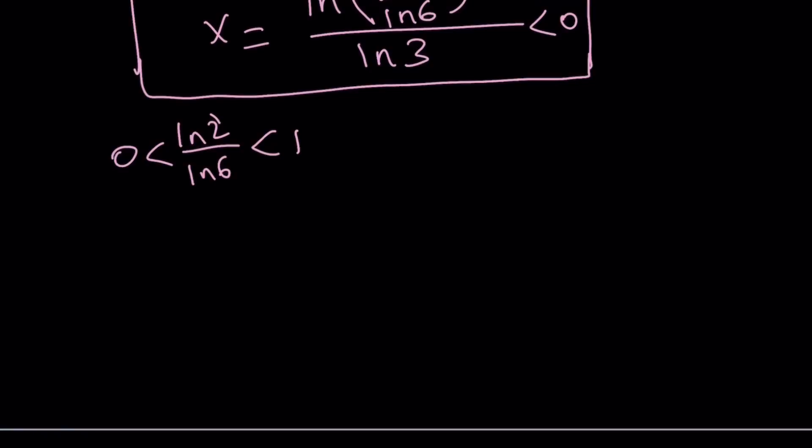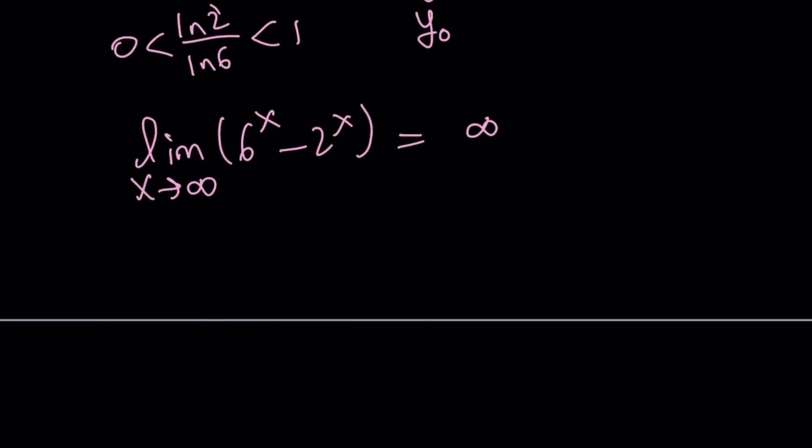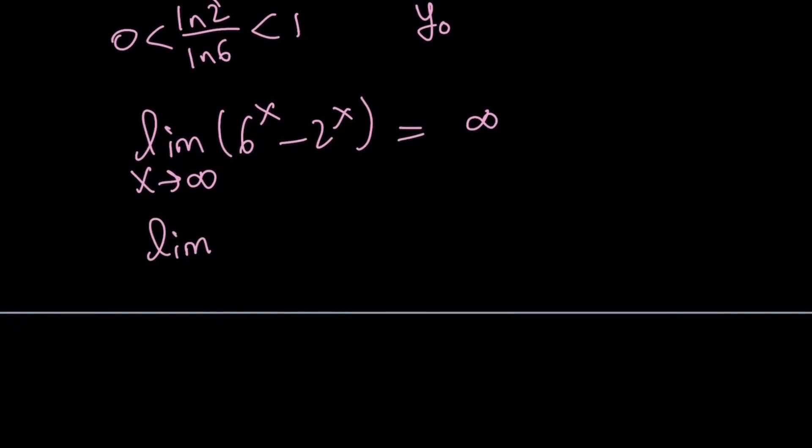So we have a negative x value. And what about the y value? If you plug it in, and let's call this x sub 0, by the way. And let's call the y coordinate y sub 0. So we do have either a maximum or a minimum. Let's go ahead and take a look at a couple other things, such as limit. As x approaches infinity of 6 to the x minus 2 to the x. Now obviously, 6 to the power x is going to grow much faster than 2 to the x. So this limit is going to be infinity.